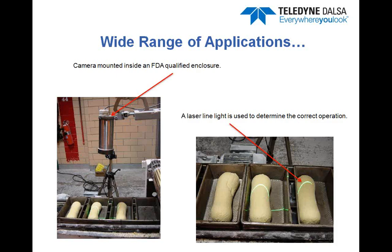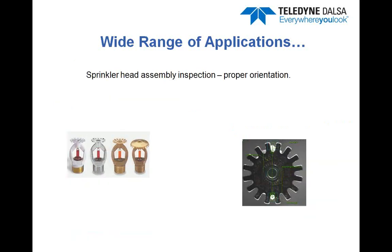Another application example is a sprinkler head assembly inspection. This company manufactures a variety of different sprinkler heads, and you can see them on the left. On the right is an actual picture of the application where we're using machine vision tools to verify that the diverter assembly is correctly positioned rotationally, which is important for the way the water comes out of these sprinklers.